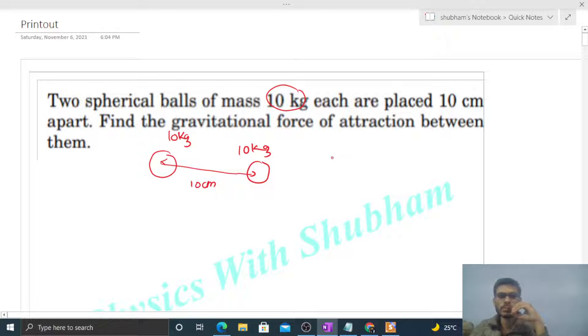So what will be the gravitational force of attraction? That will be capital G times m1 times m2 divided by distance squared. Capital G is 6.67 into 10 raised to the power minus 11, m1 is 10, m2 is again 10.